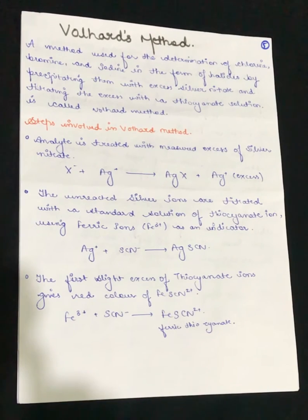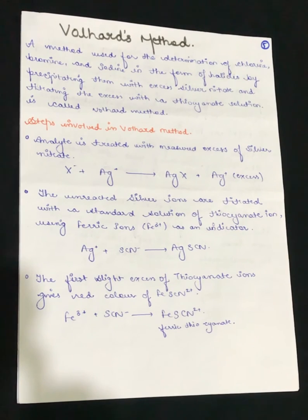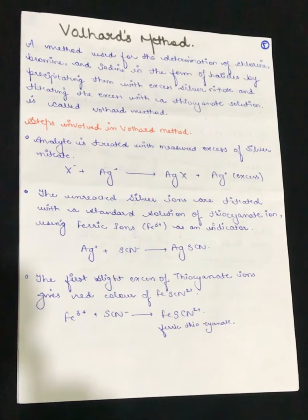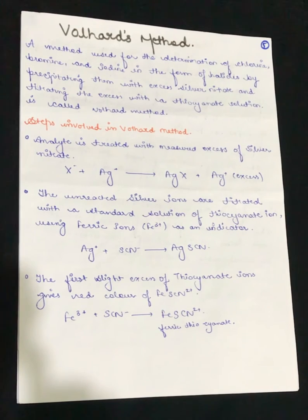In this video we are going to study about the Volhard's method and the modified Volhard's method. These two methods are about the analysis of the halides — precipitation and titration come under the Volhard's method — and then we have a modification that is known as the modified Volhard's method.